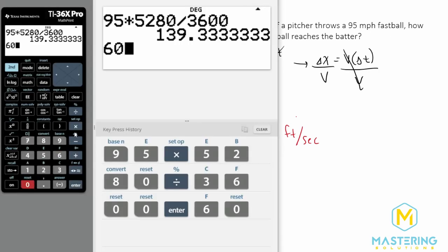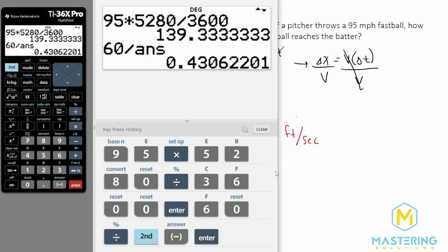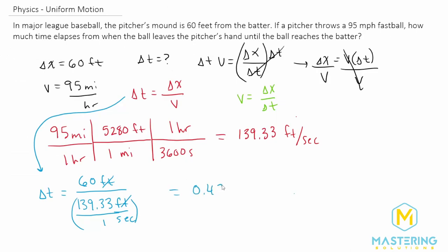And so we have 60 divided by 139.33. And that is 0.431 or 0.43 seconds for the time that it takes the baseball to leave the pitcher's hand to reach the batter.